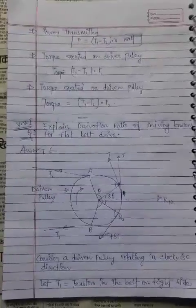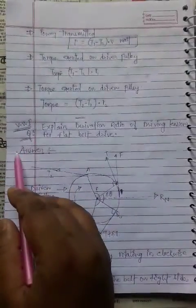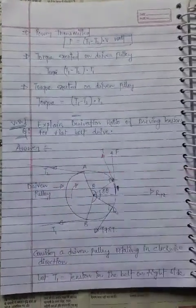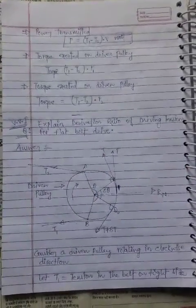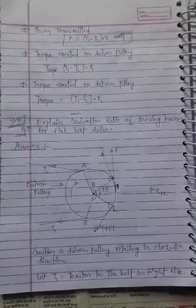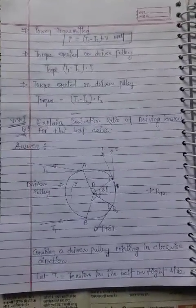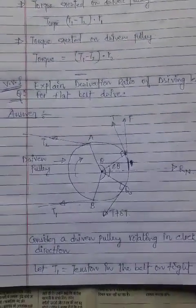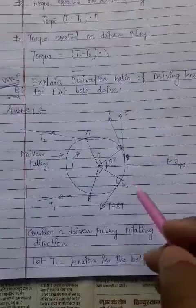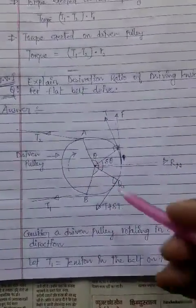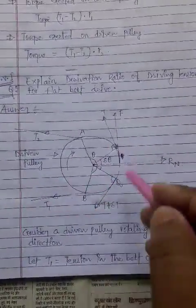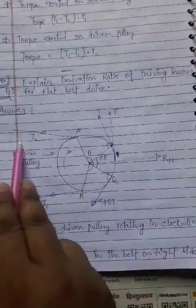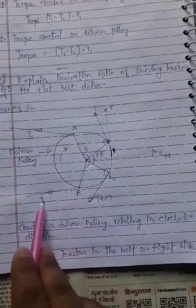Now one most important question: explain the derivation of the ratio of driving tension for flat belt drive. The ratio of driving tension means T1 by T2 — that is, the tension on the tight side to the tension on the slack side. Consider a driven pulley rotating with tension T2 and tension T1.